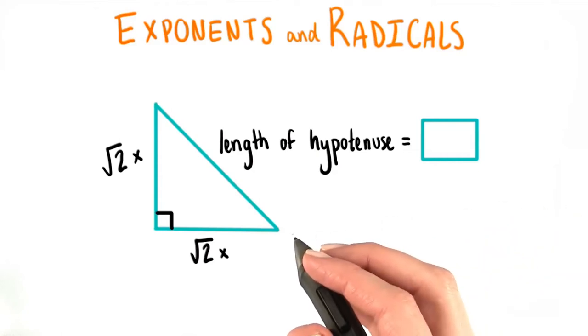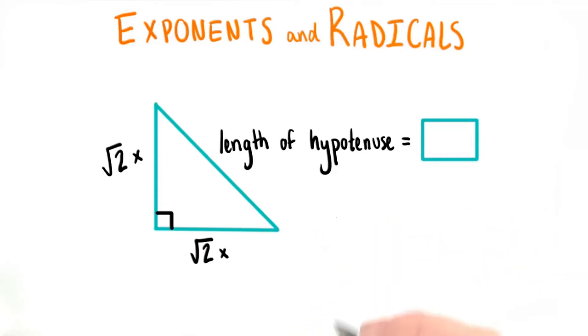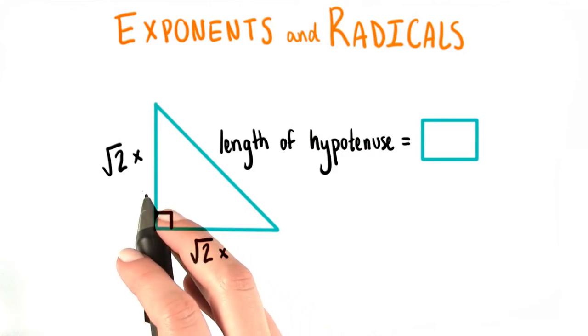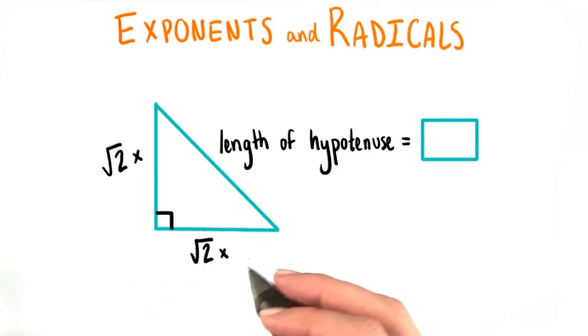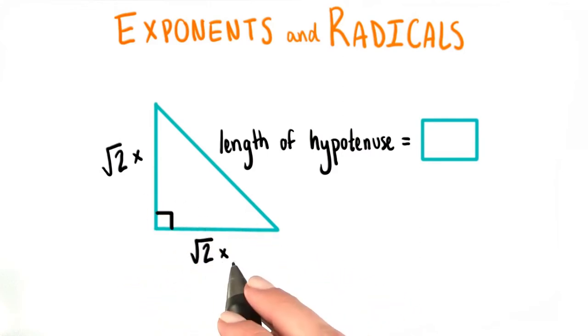Let's think back, way, way back to right triangles. Let's say that I have a right triangle whose two shorter legs are both equal to the square root of 2 times x.